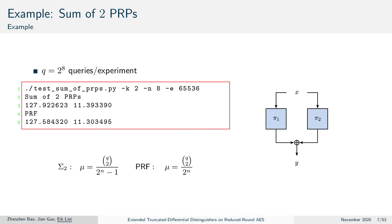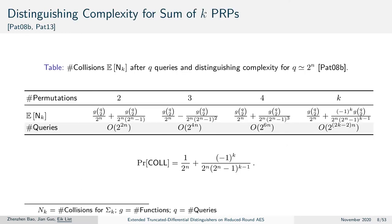Given enough queries one can distinguish those constructions from random. Patarin considered k permutations and found a general formula which yields the probability of a collision as 1 divided by 2^n plus or minus some term that depends on the number of permutations.